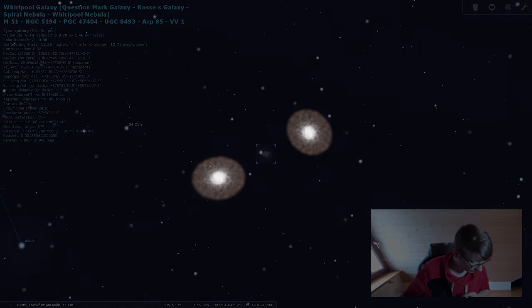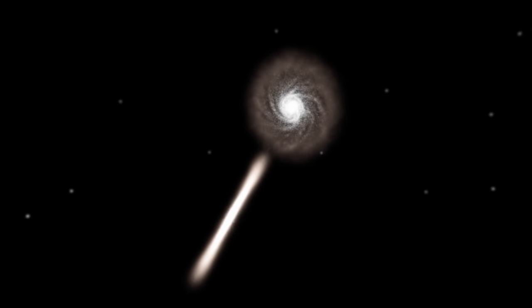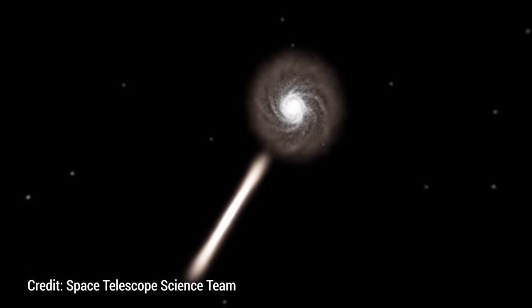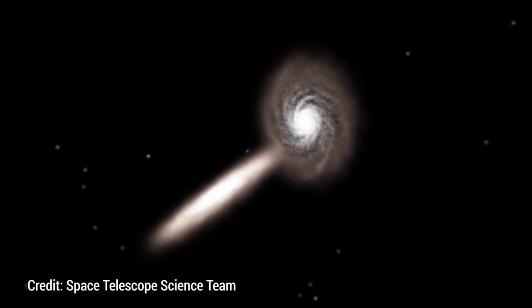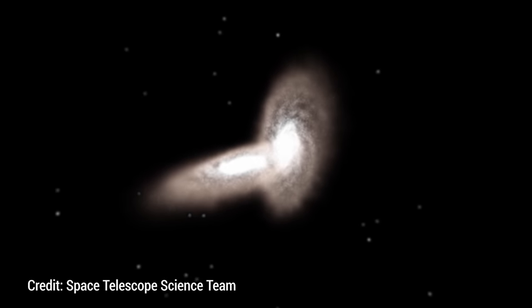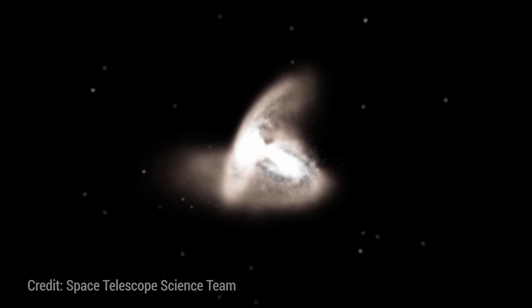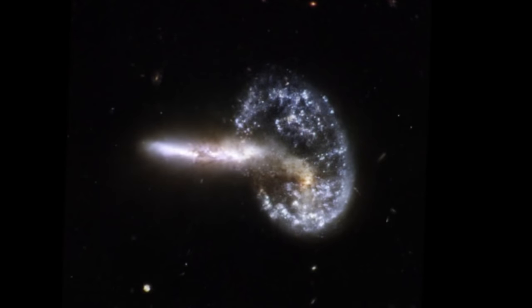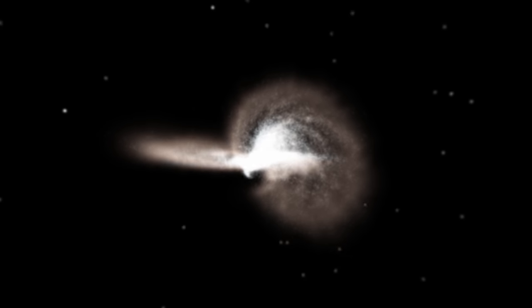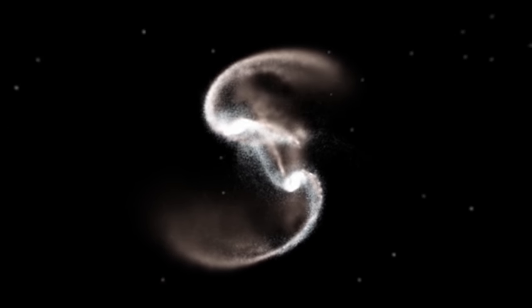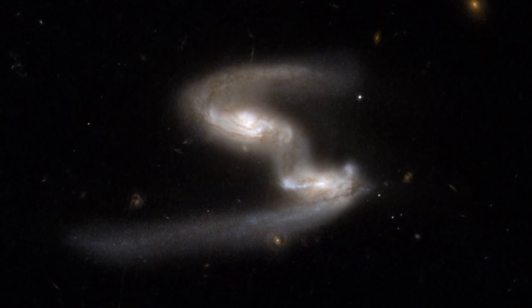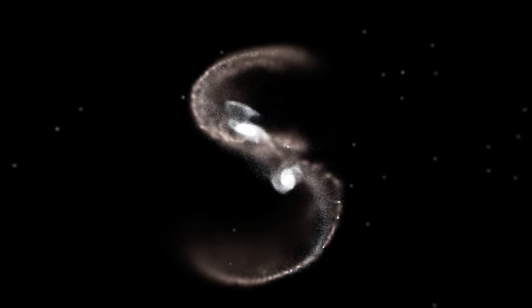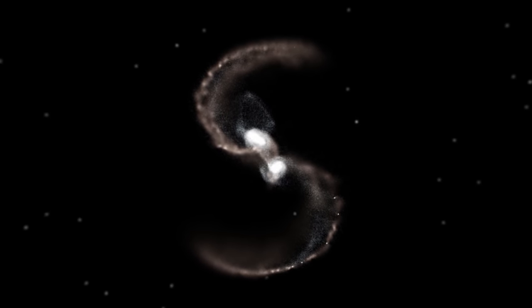When galaxies collide, they deform each other, pulling on the other with their own gravity. You may have seen this animation from the space telescope science team before. For me, the most striking aspect is this. Even though this is a collision of literally galactic proportions, it is unlikely that any object within these galaxies will ever actually collide. All of the interaction is purely by gravity, not by impacts.